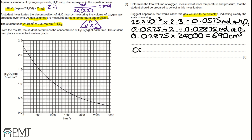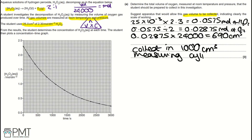Therefore, we need to collect gas in a 1,000 cm³ measuring cylinder — this is the piece of apparatus used in the experiment. To get the three marks for this question, you need to correctly work out the moles of oxygen, the volume of oxygen, and state that you're going to use a 1,000 cm³ measuring cylinder to collect the oxygen gas.